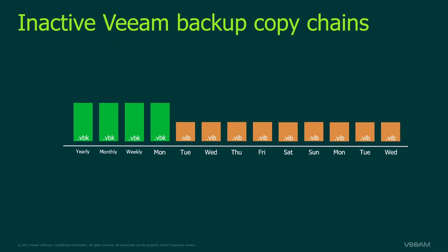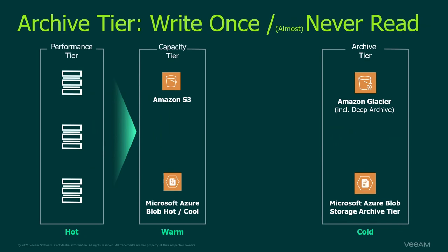What about GFS-style backups — grandfather, father, son — weekly, monthly, yearly? With version 11 we introduced the archive tier, a third tier in the scale-out backup repository. We have the performance tier (the hot tier), the capacity tier (the warm tier — even if you use infrequent access or Microsoft Azure Blob Cool, we still call it warm), and all backups residing there can be moved to the archive tier — Amazon Glacier or Microsoft Azure Blob Archive.